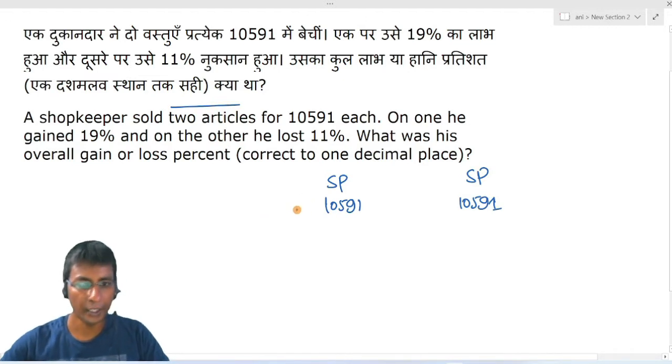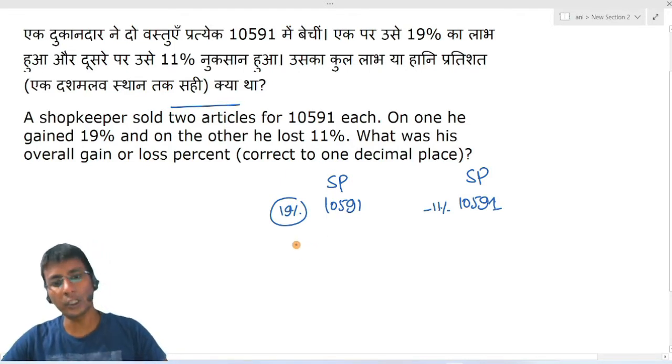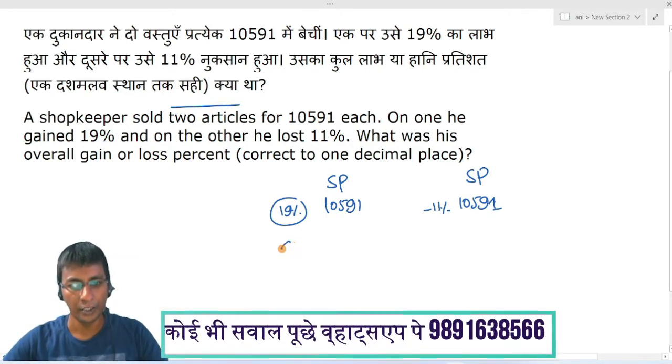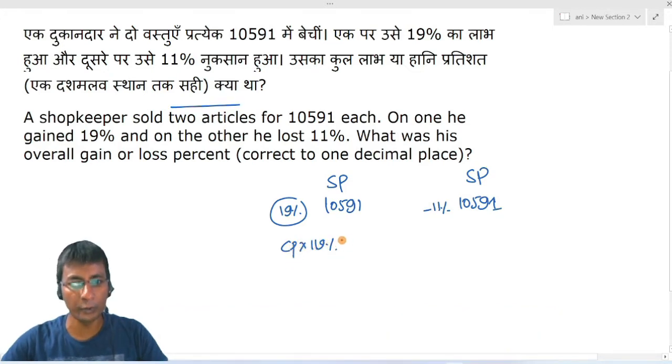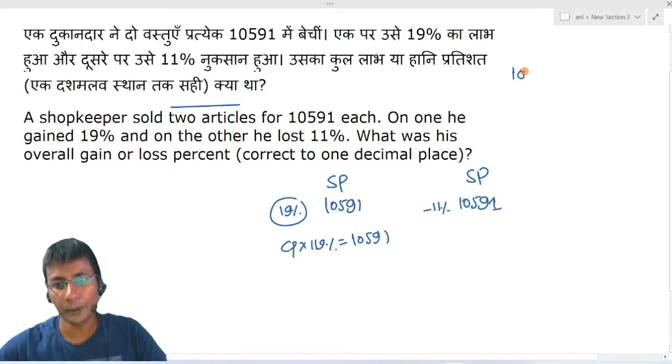On the first one, he has 19% profit and on the other he has 11% loss. For 19% profit, if the cost price is 100, the selling price will be 119. So cost price times 119% equals 10591.